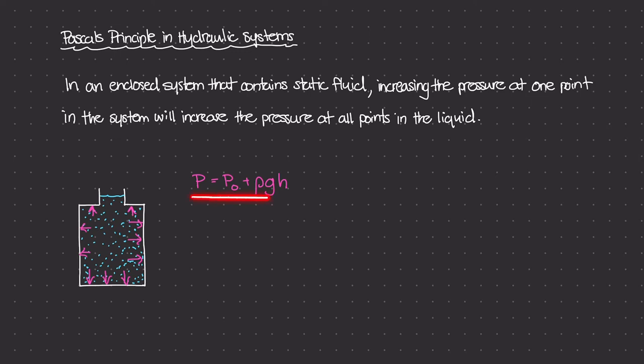And that makes sense if we look at this equation. If we increase P0 anywhere, then the resulting pressure anywhere inside of this container will increase. So right now, we're assuming that at the very top of this container, our P0 really is just open to the atmosphere. So in this particular case, it's equal to 1 atm.